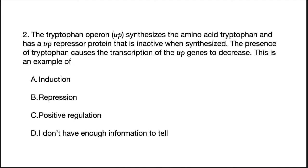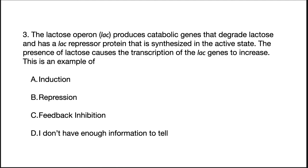The answer to the first question is B. The trp repressor is inactive to begin with and then binds to the operon when its co-repressor tryptophan binds to it — that is a classic repression pathway. The answer to the second question is A. Since the repressor is active before its signal molecule binds, this is an example of induction. By the way, both of these are examples of negative regulation, since they both involve a repressor.